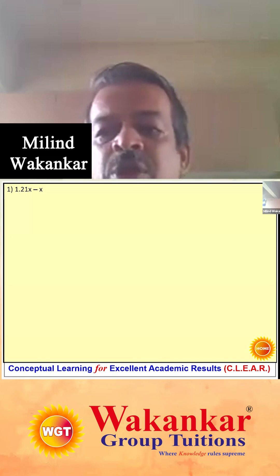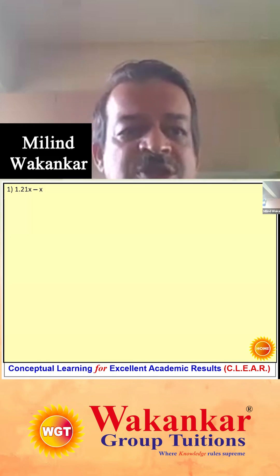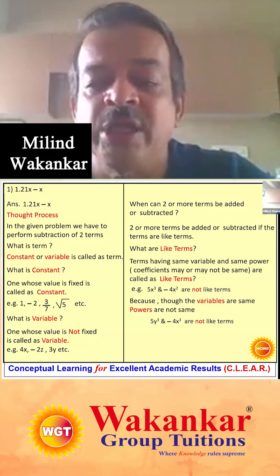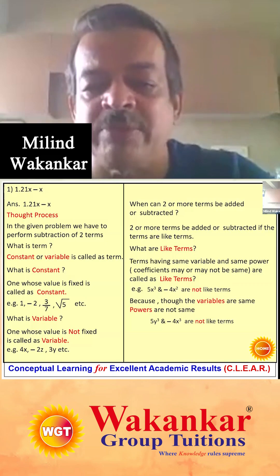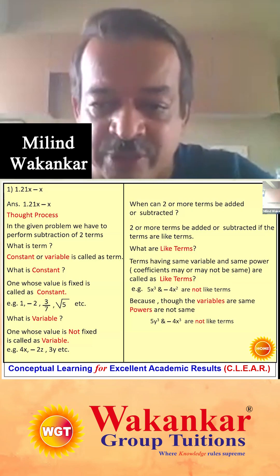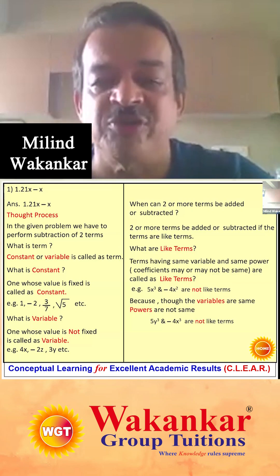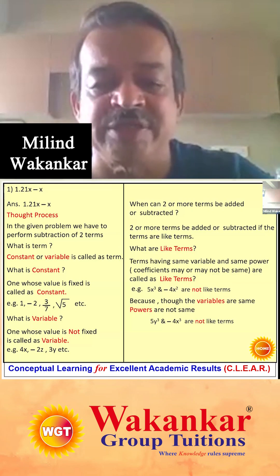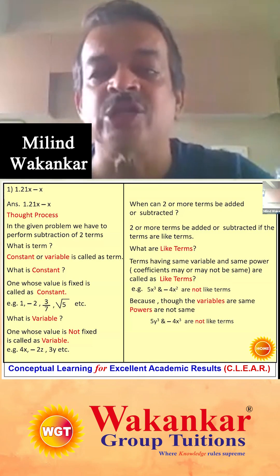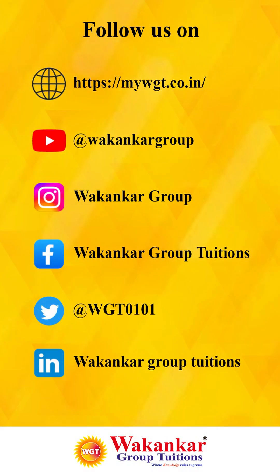This was one of the questions. What is important for all of us — let us take the second example. What do you find in the terms 5y cubed and minus 4x cubed? Though the powers are the same, that is 3, but the variable is not the same. In the first case, the variable is y; in the second case, it is x. And hence, my conclusion is these are not like terms.